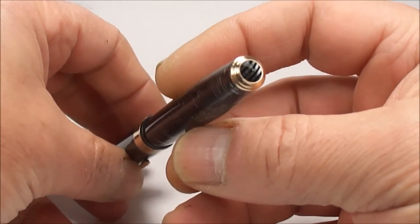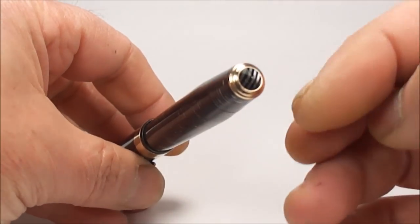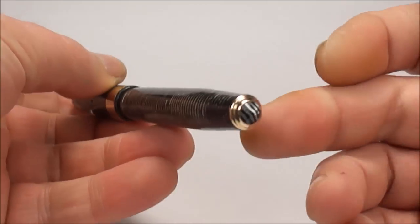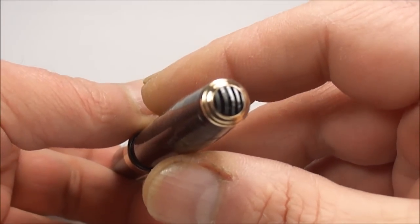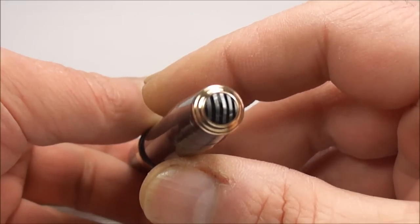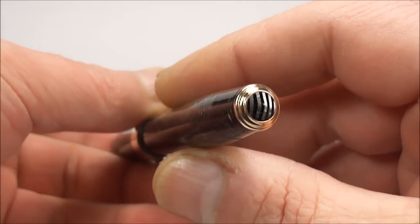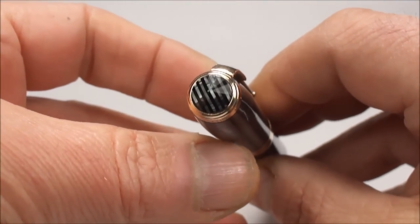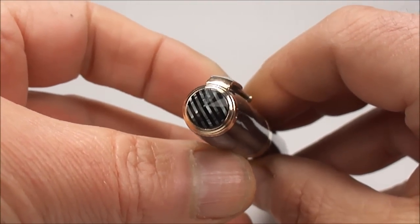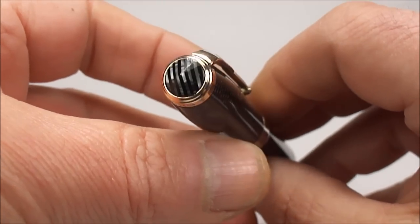What you'll also notice it's a double jewelled pen as well. You've got a jewel to the bottom of the barrel there or the bottom of the blind cap which matches the design or the colour of the pen. And if we take you up to the top here you'll also see to the top of the cap there's a lovely matching jewel as well.